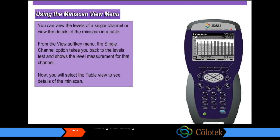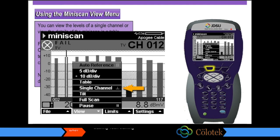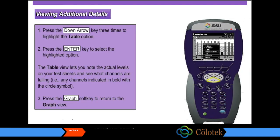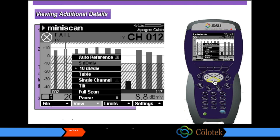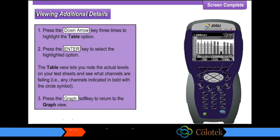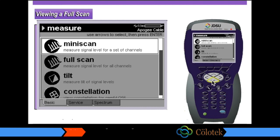You can view the levels of a single channel or view the details of the mini scan in a table. From the view soft key menu, the single channel option takes you back to the levels test and shows the level measurement for that channel. To select the table view, press the down arrow key three times, then press the enter key. The table view lets you note the actual levels of each channel — channels that are failing are indicated in bold with the circle symbol. Press the graph soft key to return to graph view. To view a full scan, select it from the measure mode basic menu — note this feature is not available on the DSAM 1000.